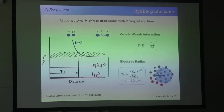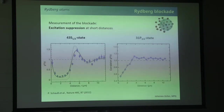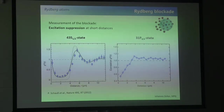The basics of Rydberg physics important for the rest is blockade. Rydberg atoms have strong interactions. There is blockade with van der Waals interaction, and in our case the blockade radius is between one and ten microns. The separation of our atoms is approximately 500 nanometers lattice spacing, so the blockade radius can be much larger. We can measure this by exciting Rydberg atoms, pumping them down, and checking correlations. Blockade tells you that if you have a Rydberg atom at a specific position, the next one can only appear at some minimum distance.